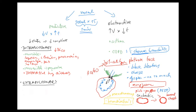In contrast, for extrapulmonary causes, there is nothing wrong with the interstitium or the lungs themselves — the cause is outside the lungs. That's why DLCO is going to be normal. This is useful clinically: if you do a pulmonary function test showing restrictive disease and then do DLCO and it's normal, you can think of extrapulmonary causes.